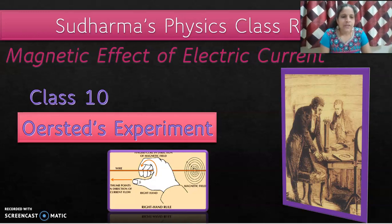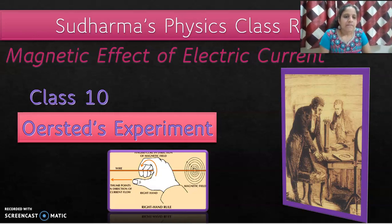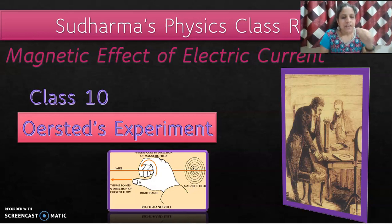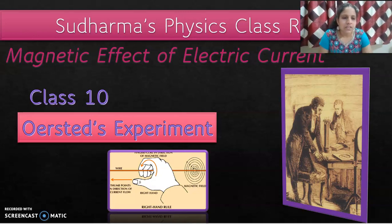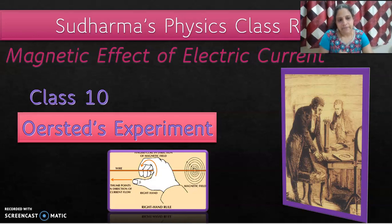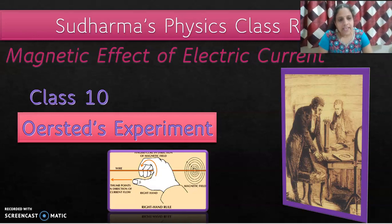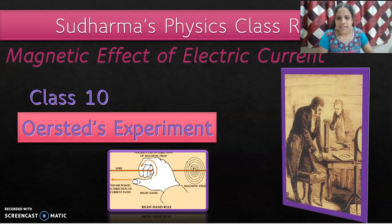How many of you have heard about the scientist Hans Christian Oersted? He is the person who understood that when electric current passes through a conductor, a magnetic field is produced around the conductor. He was demonstrating an electricity experiment to his students and found that the compass needle kept on the table was deflecting. Since there was no magnet around, he started experimenting and understood that there is a magnetic field causing the deflection. So let's learn in detail about the magnetic effect of electric current.